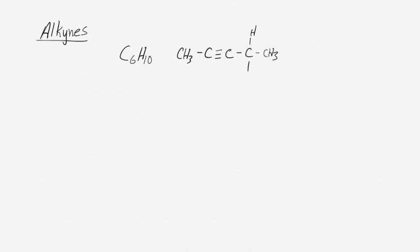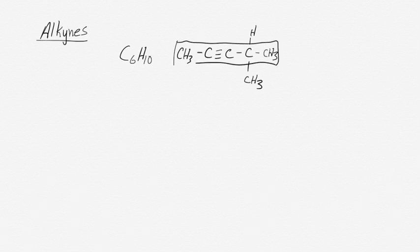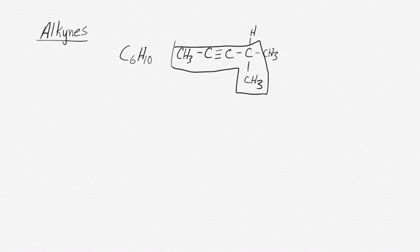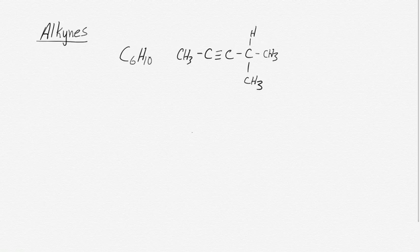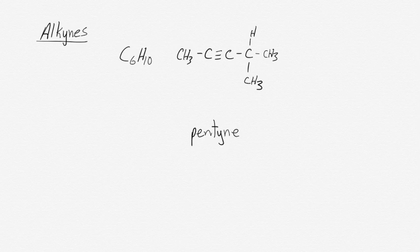Alkynes are actually even easier to name, because they can't have that cis-trans isomer effect because they only have a linear geometry. There can only ever be two electron domains around a triple bonded carbon. So let's consider C6H10. One isomer of C6H10 is as follows. We name things exactly the same as we would name them if they were alkanes. We look for the longest carbon chain. In this case, there are five carbons in the longest chain. That would be this chain, or it would be this chain. Both are effectively equivalent. Because there are five carbons in the longest chain, we start with a pent for our base. Because there's a triple bond, it gets a Y-N-E ending. So we have a pentyne.